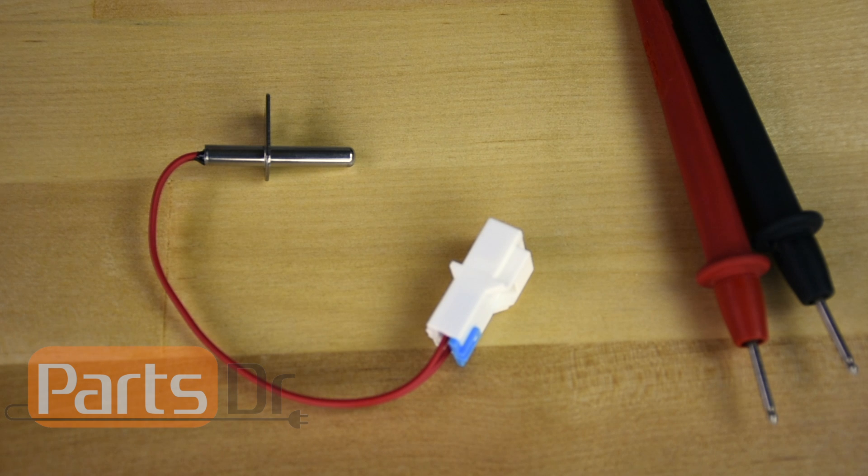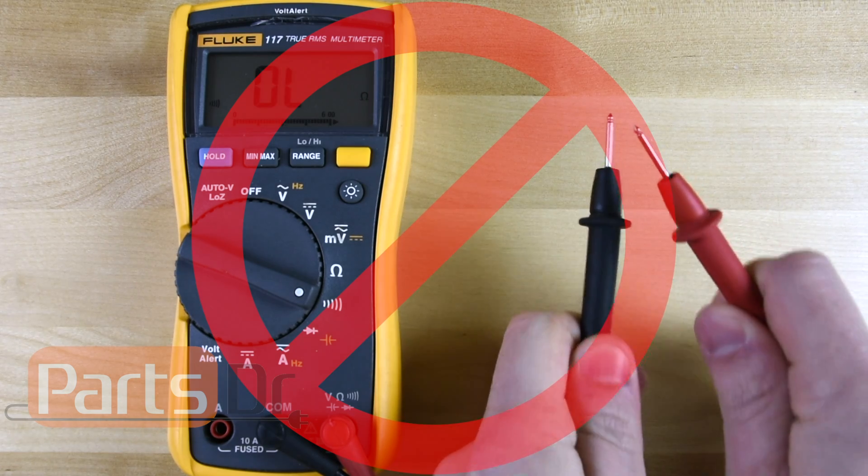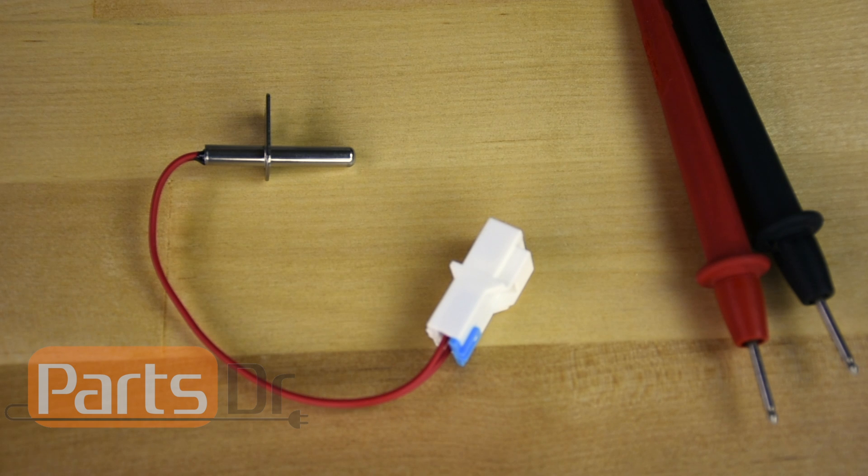Using a multimeter, you'll need to do an ohm test to check the resistance of the thermistor. It is important to note that you cannot do a continuity test on a thermistor. Thermistors have a high ohm value that won't register on a continuity test on most multimeters.